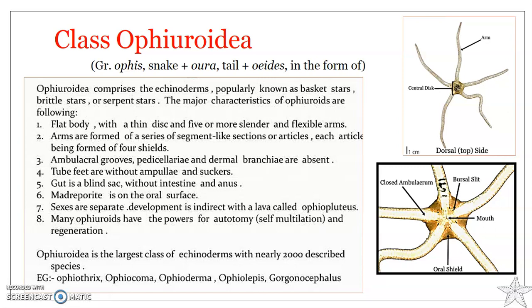Basket stars have arms that branch repeatedly. Neither dermal branchiae nor pedicellariae are present in the ophiuroids. As you can see here, ambulacral grooves, pedicellariae, and dermal branchiae are all absent in the ophiuroids.